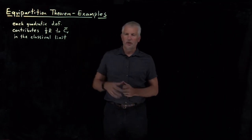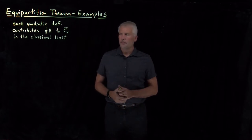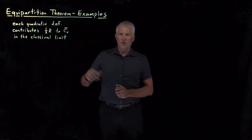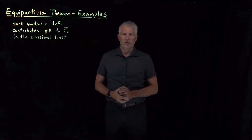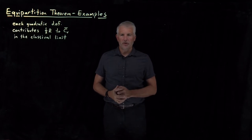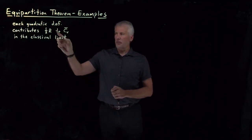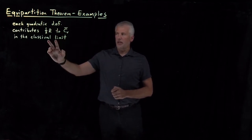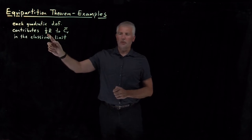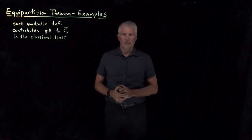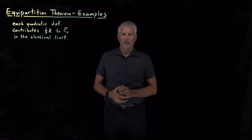We've seen the equipartition theorem. It tells us that for every quadratic degree of freedom — every degree of freedom that shows up in the energy as some variable squared — that degree of freedom in the classical limit is going to contribute a factor of one-half R to the molar heat capacity, specifically the constant volume heat capacity.